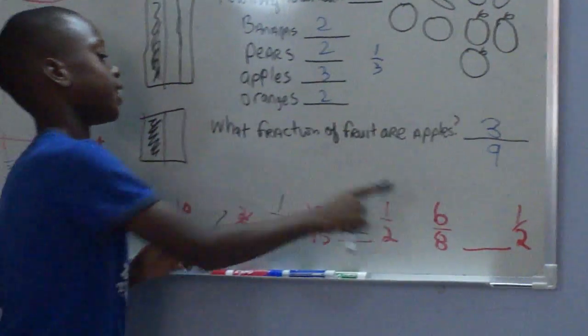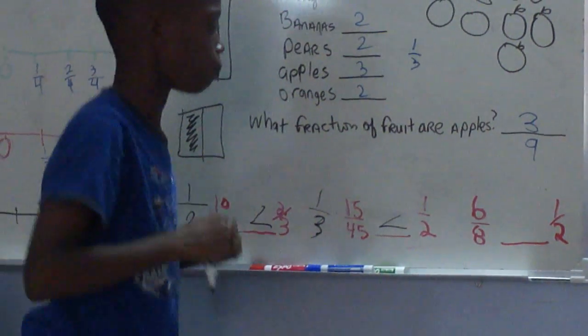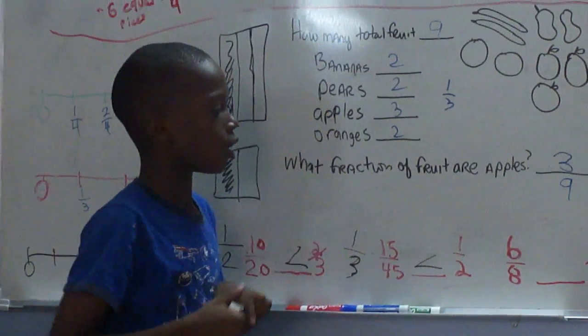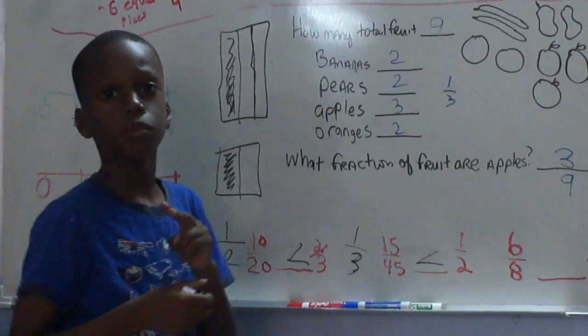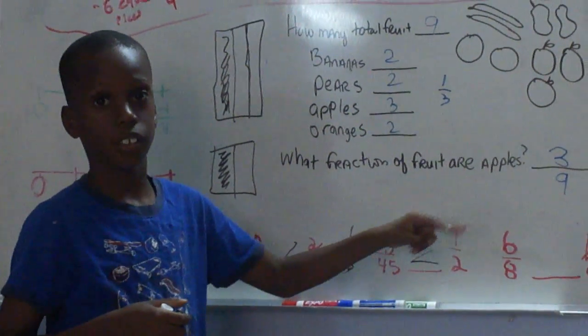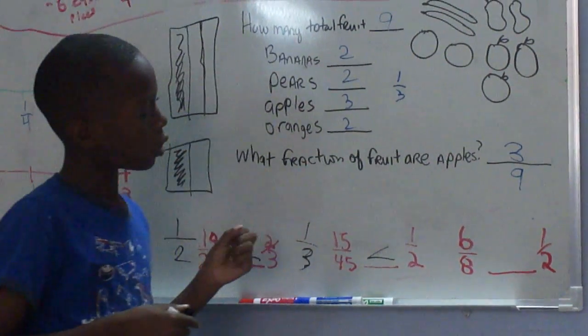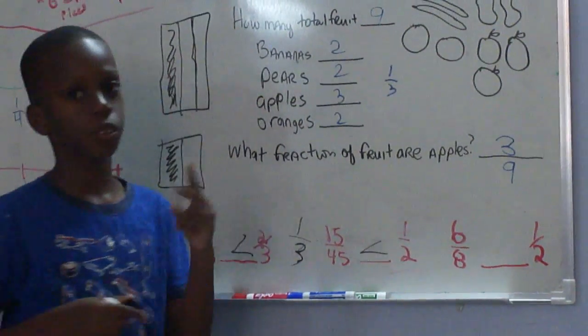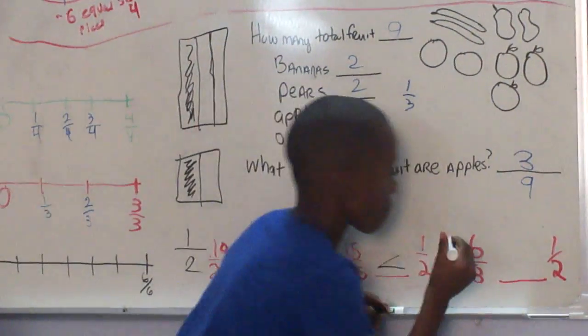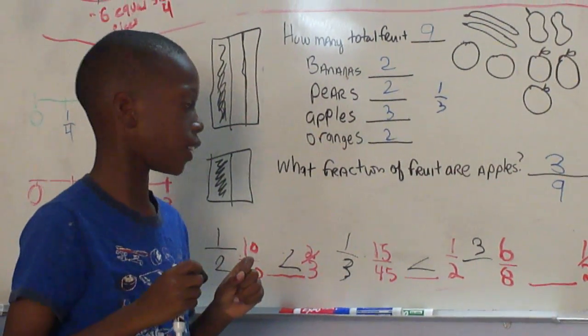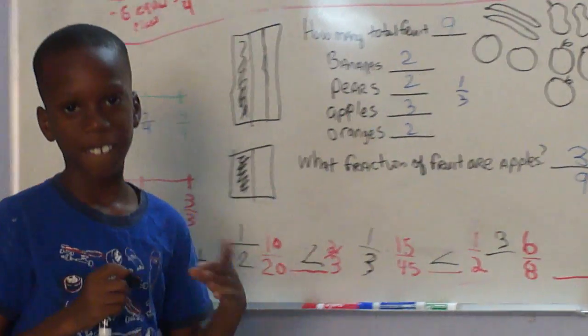Next one, six over eight goes to one-half. You can't do six, so two can go into both of these. Two goes into six three times. Two goes into eight four times.